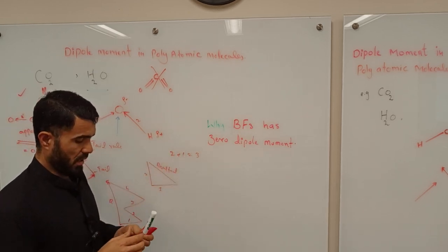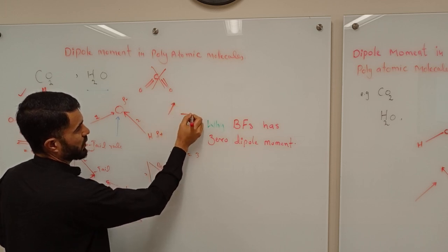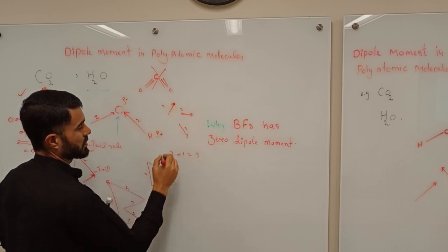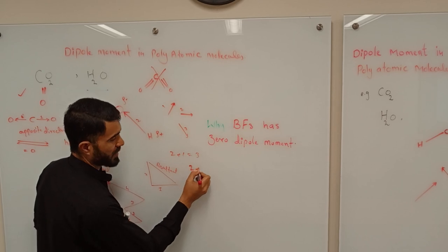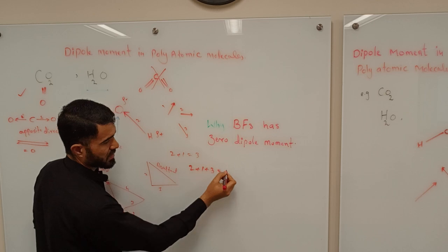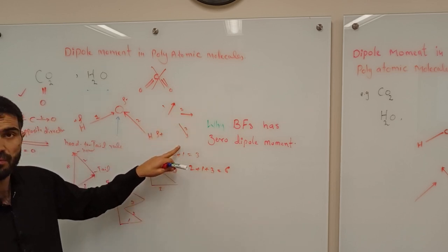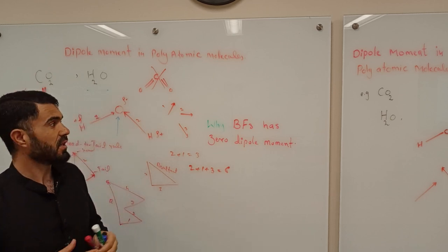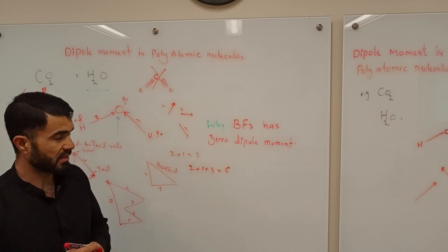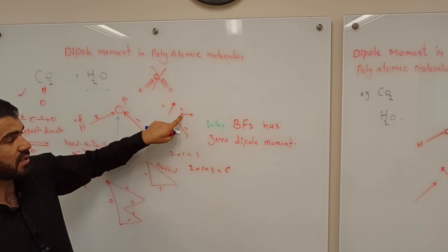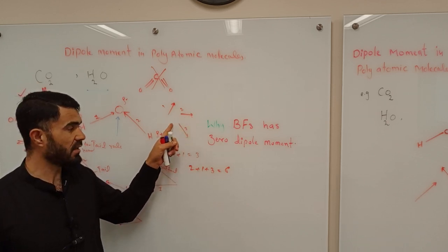When you have two or more vectors — vector one, vector two, vector three, vector four, and so on — you can add these vectors just like you add numbers: two plus one plus three equals six. Similarly you can add three or more vectors. But there is a rule to add vectors, called the head-to-tail rule. The head-to-tail rule tells us that if you want to add vectors, you place the tail of the second vector at the head of the first vector.